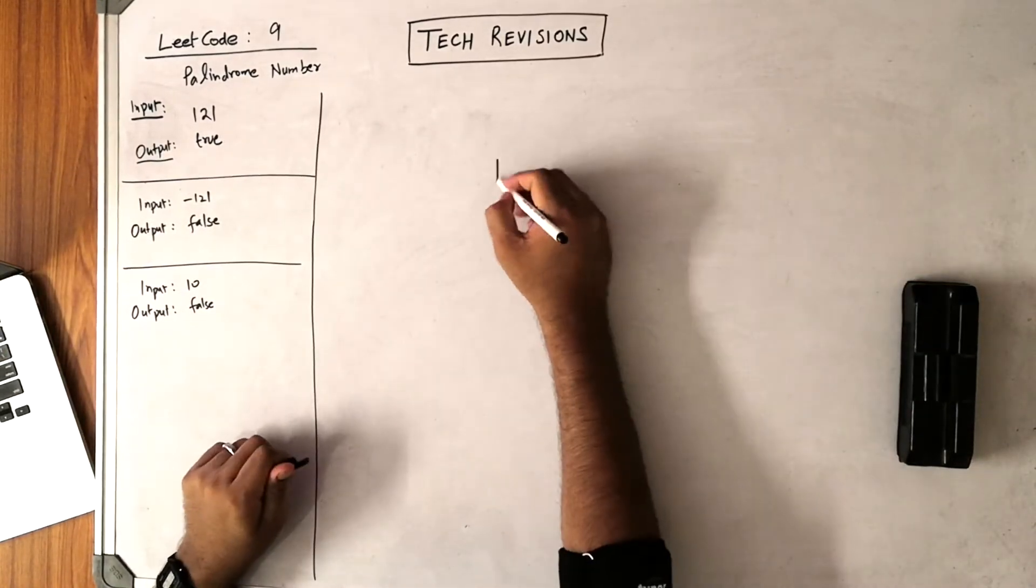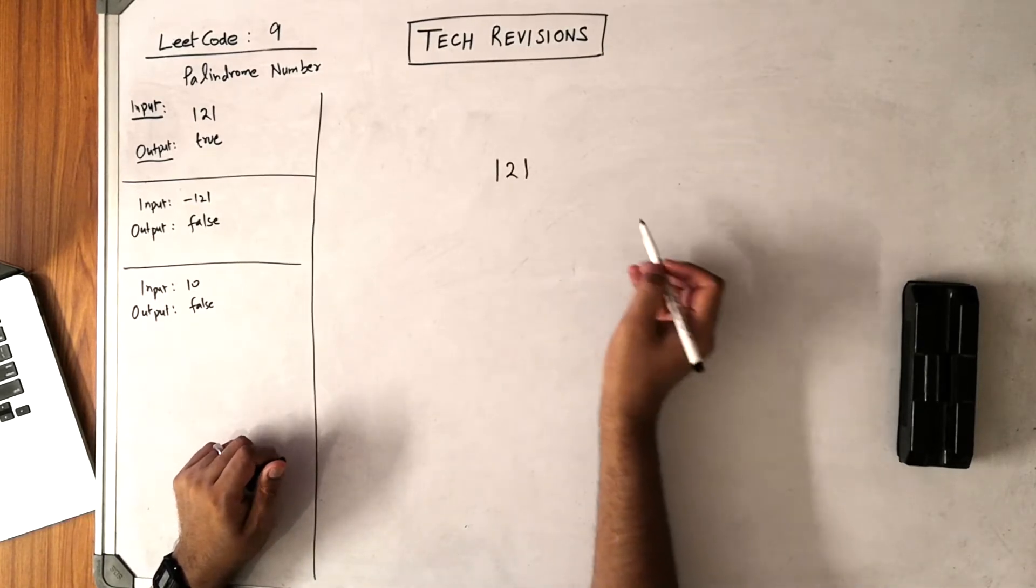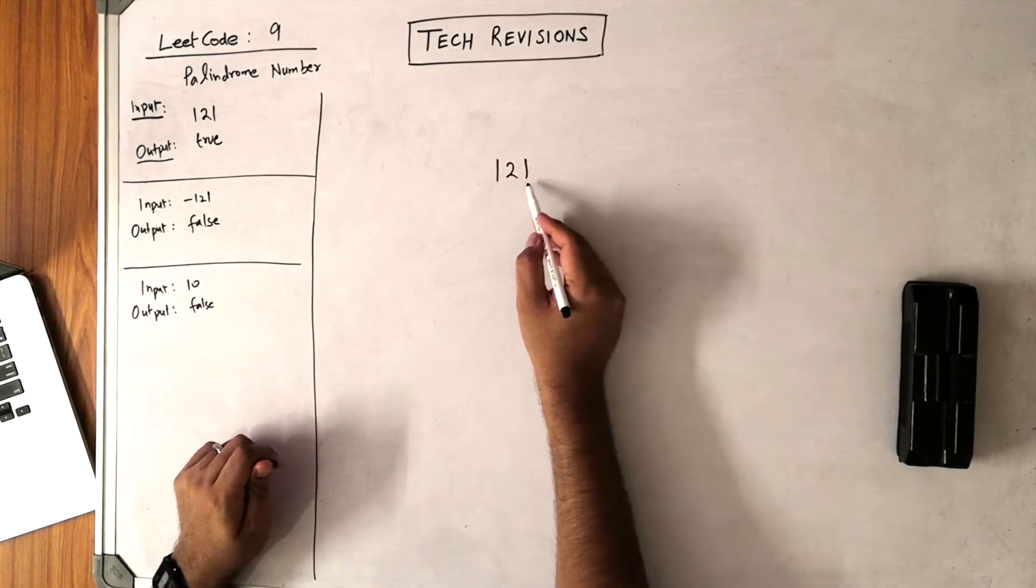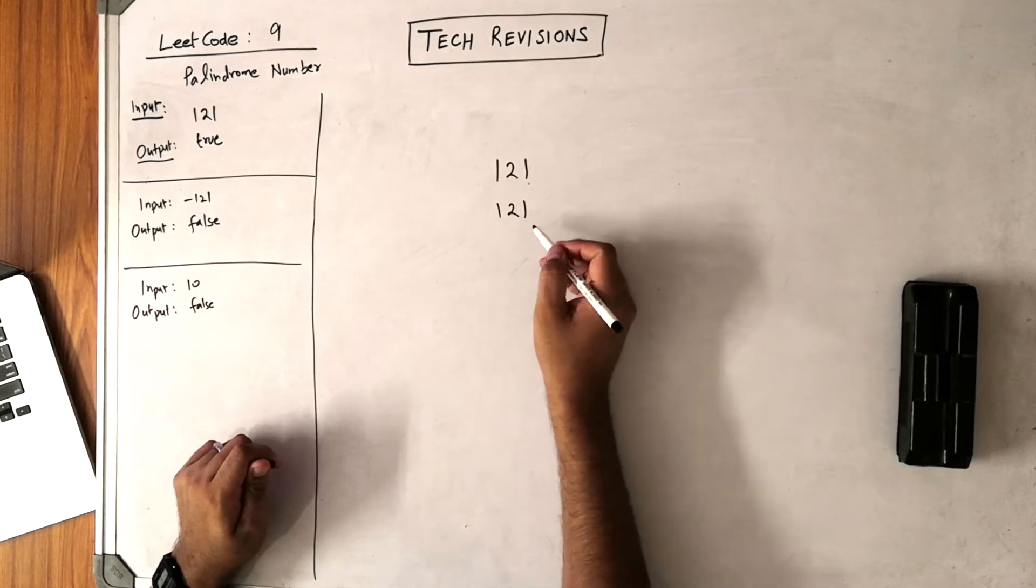Why is it true? Because 121, if you read it from the right-hand side, when you start reading from one to one, it is again the same number, and hence it is a palindrome.